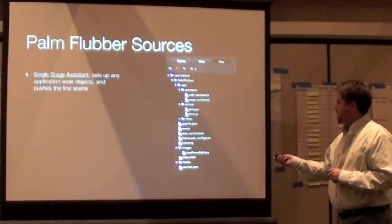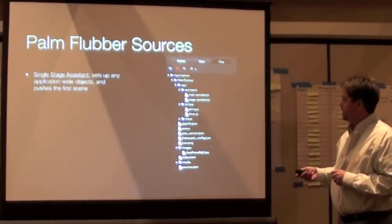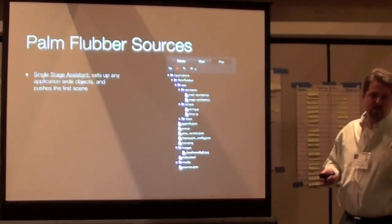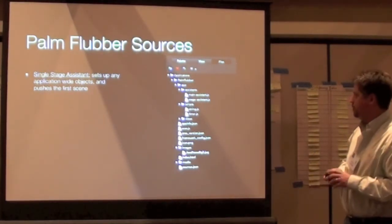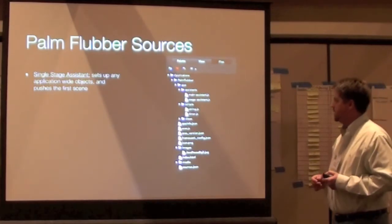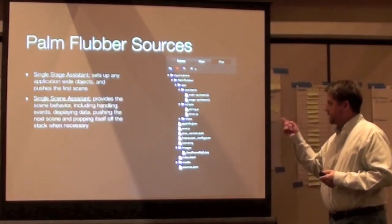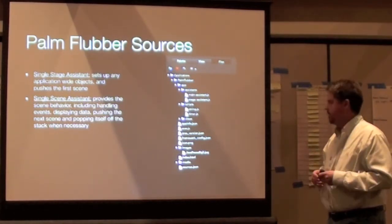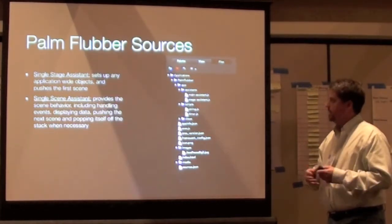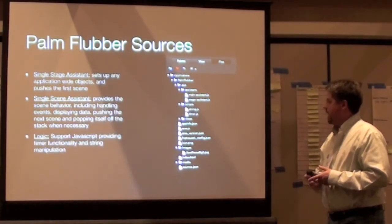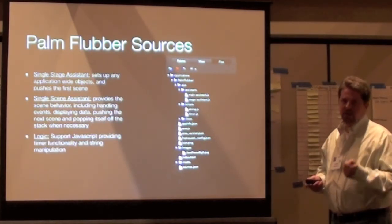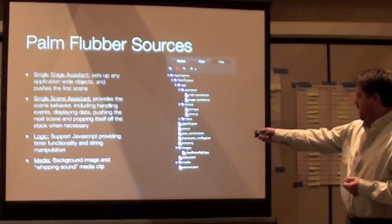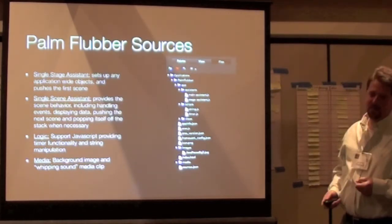In terms of the sources that I required, I needed a single stage assistant, which is pretty boilerplate — its only responsibility was pushing the first scene onto the stage. And then I needed a scene assistant, which was a JavaScript file that handled most of the behavior in the existing scene. Some business logic I decided to factor out into a separate file for my timer functionality, and I needed to get the whipping sound, of course.